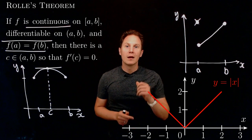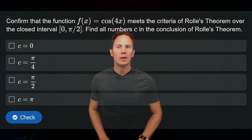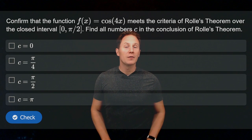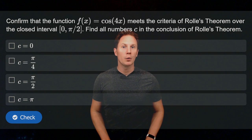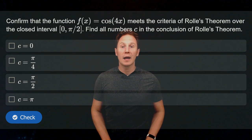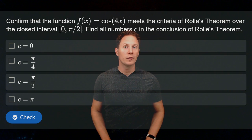Let's see if you got the idea. Confirm that the function f(x) = cos(4x) meets the criteria of Rolle's theorem over the closed interval [0, π/2], and find all numbers c that are in the conclusion of Rolle's theorem for this function.